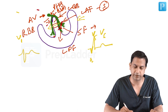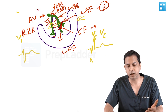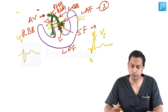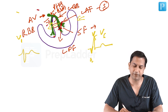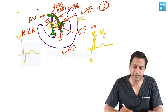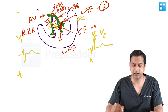In right bundle branch block, the right bundle is blocked. If you see the conduction of impulse here, the left side impulse will be intact. You will have the initial activation of the mid septum, so there will be an R wave in V1.